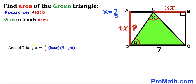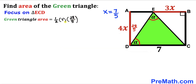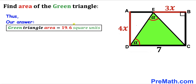Recalling the area of a triangle formula — Area = ½ × base × height — and filling in the values, we get ½ × 7 × (28/5). Multiplying out the right-hand side gives us 196/10, which equals 19.6 square units. So the area of this green shaded triangle ECD turns out to be 19.6 square units. That's our final answer.